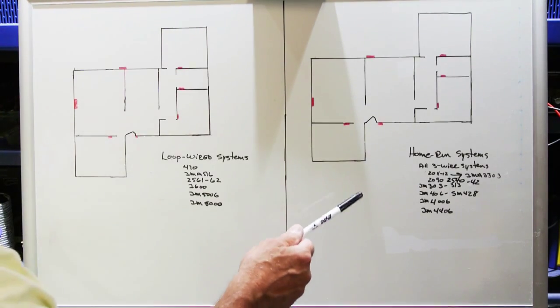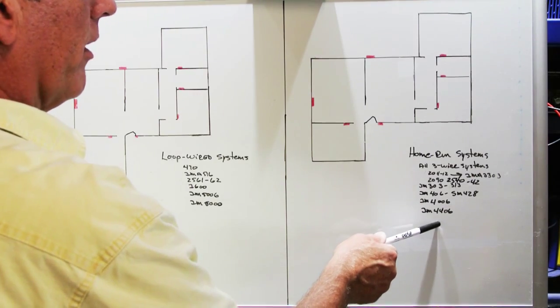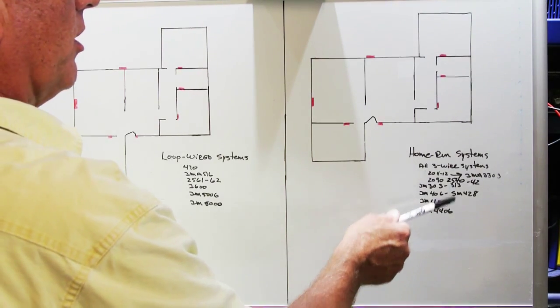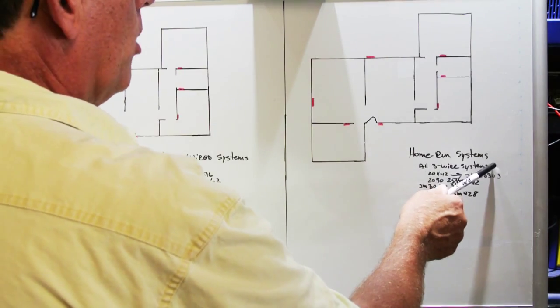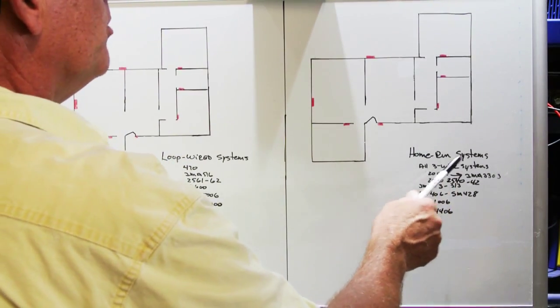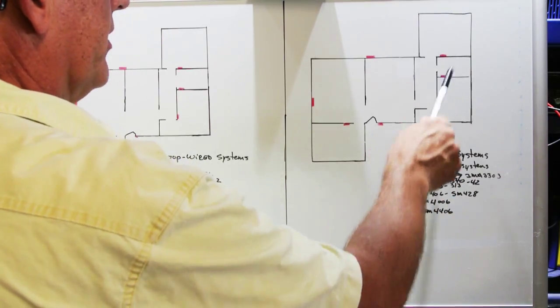There is a rule about how systems have to be wired. Equipment, all of these models and more that were designed to be installed with home run wiring can only be home run. They cannot be loop wired. You cannot have more than one remote station on the same cable.